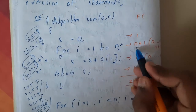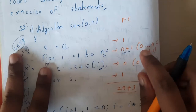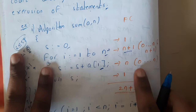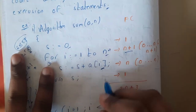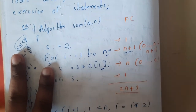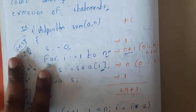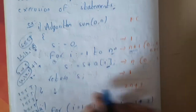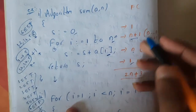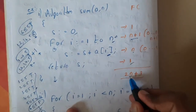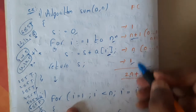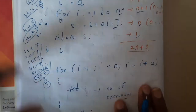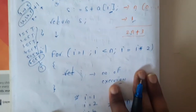So the loop condition executes n+1 times, from 0 to n. The body statement executes n times (0 to n, not the last iteration when condition fails). The return statement executes once. Adding these: (n+1) + n + 1 = 2n + 2, which simplifies to 2n + 3 roughly — approximately 2n + 3.